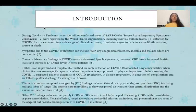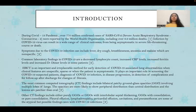During the COVID-19 pandemic, over 770 million confirmed cases of SARS-CoV-2 were reported by the World Health Organization, including over 6.9 million deaths. Infection by COVID-19 virus can result in a wide range of clinical outcomes, from being asymptomatic to a severe life-threatening course or death.